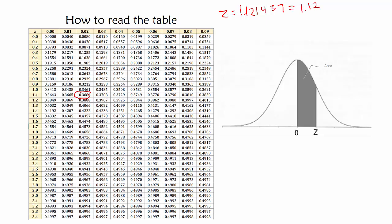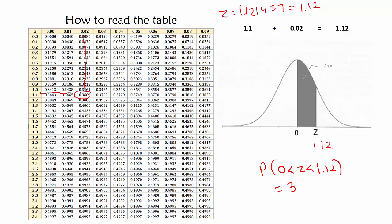Here's how you find a z: we look at the first column and find the first two digits, then we go to the first row and get the third digit of 0.02. The intersection of these two values tells us the probability, and the probability we have just found is between the mean and a z of 1.12 — 36.86%. When we talk about this, we talk about area under the curve, or probability, for z at 1.12. This table gave us a probability of 36.86%.